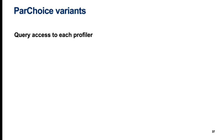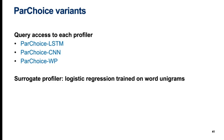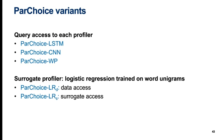We compare the baselines to six ParChoice variants overall that differ in paraphrase selection and the access assumptions to the author profiler or its training data. First we experiment on query access to each of our three author profilers: an LSTM profiler, a CNN profiler, and a WritePrints profiler. As our separate surrogate profiler architecture, we use word unigram-based logistic regression. We have two variants of this surrogate profiler: the first trained on the same training data as the targeted author profilers, and the second trained on the separate surrogate training data.